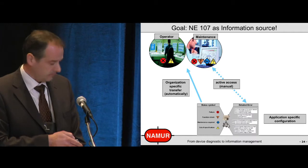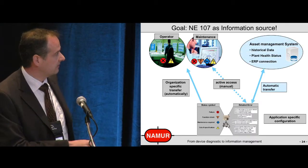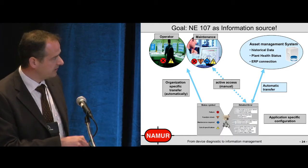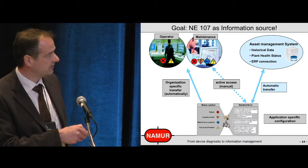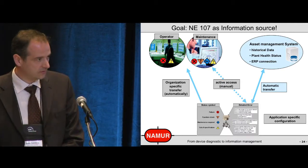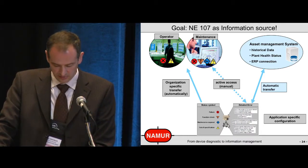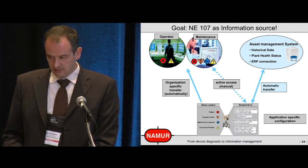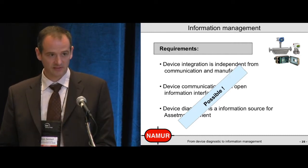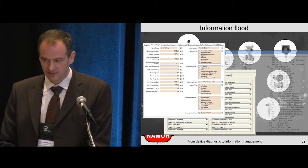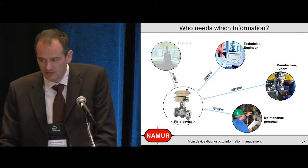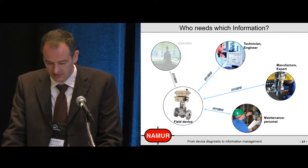In the future we need an automated transport of device information to an asset management system. We need the detailed error information to be automatically transferred to an asset management system where we can search based on historical data and analyze the real root cause for an error. So the question is: are these requirements possible today? There is a situation — an information flood — a lot of things we must structure. In the next part I want to point out how we can structure the information that comes from a field device.